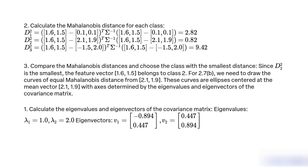Step 1: Calculate the eigenvalues and eigenvectors of the covariance matrix. λ_1 = 1.0, λ_2 = 2.0. Eigenvectors: v_1 = [-0.894, 0.447], v_2 = [0.447, 0.894].